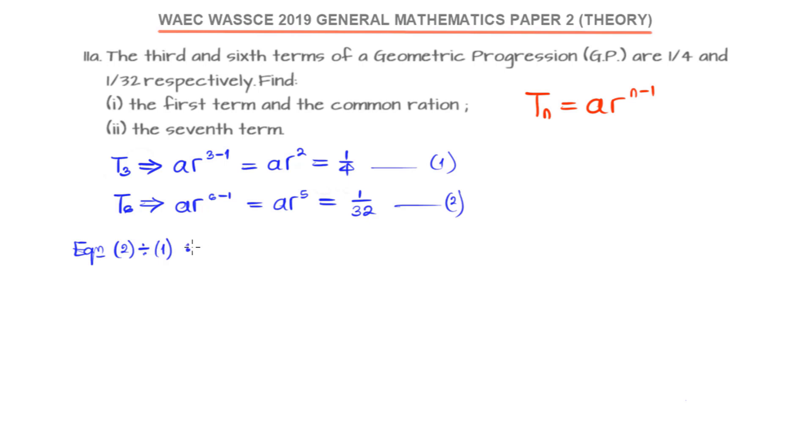I'll be using equation 2 divided by 1. So that would be AR^5 divided by AR^2 for the left-hand side, then 1/32 divided by 1/4 on the right-hand side. The A's we cut out, so here we have R^5 divided by R^2 equals 1/32 divided by 1/4.